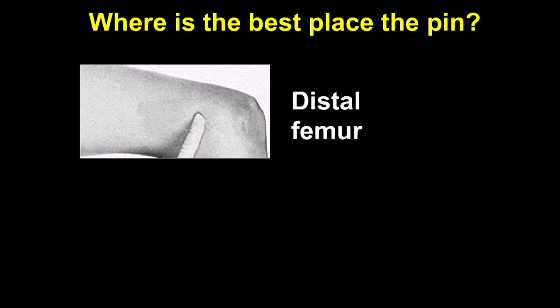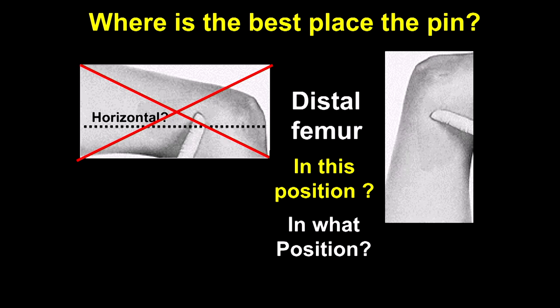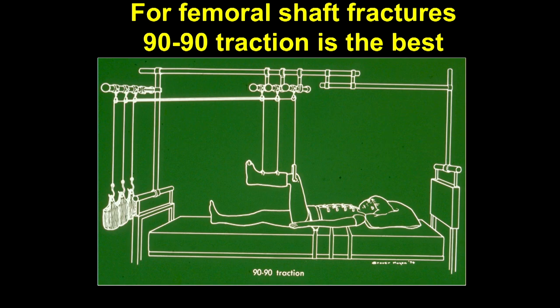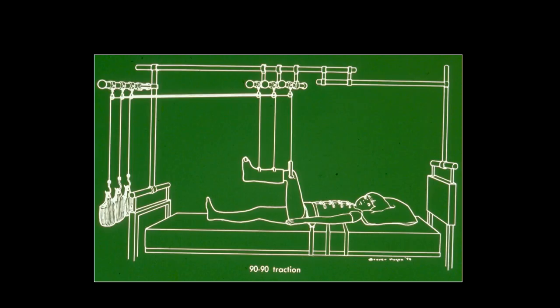Where are you going to put the pin? The distal femur. You need to have the knee flexed and put it in 90-90 traction. You can put the pin under local anesthesia, but it's a little difficult—I think it's better to put it under general anesthesia because you can't really anesthetize the bone very well. 90-90 traction is the best.